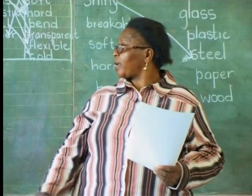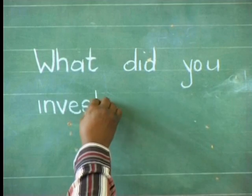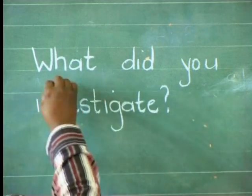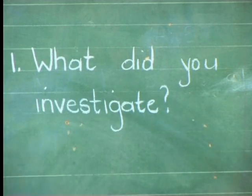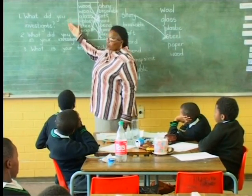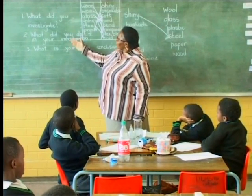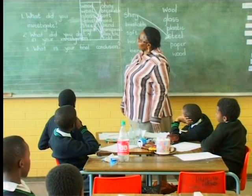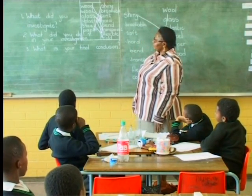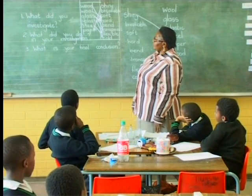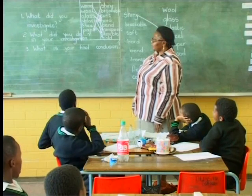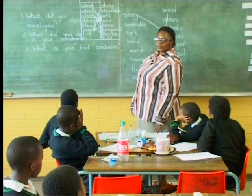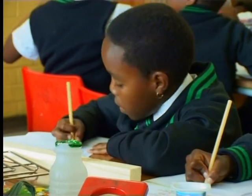Learners, I'm going to write some questions on the chalkboard. Then you're going to answer them on your paper. Write in the middle of your paper. Here are the questions you are going to answer for me. Read them in English. Number one: What did you do in your investigation? Number two: What did you find in your investigation? Number three: What is your final conclusion?